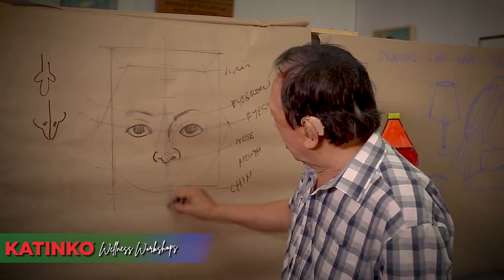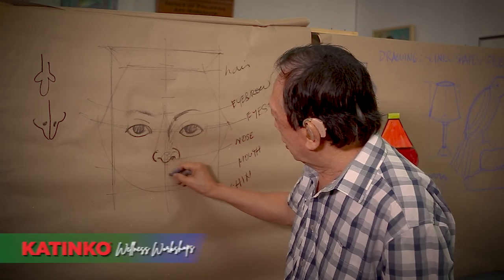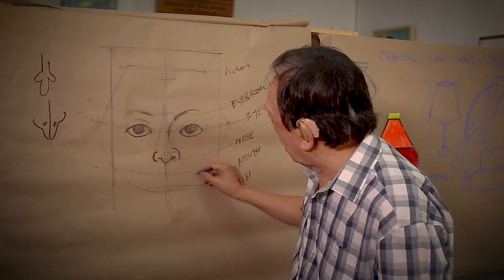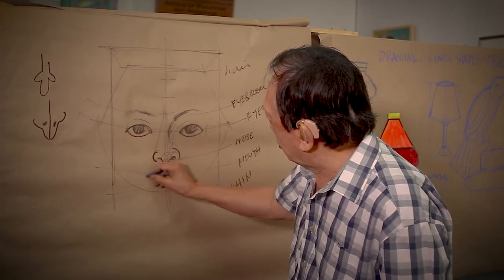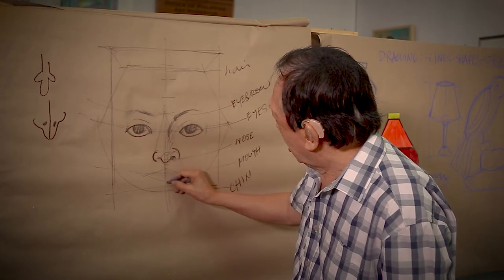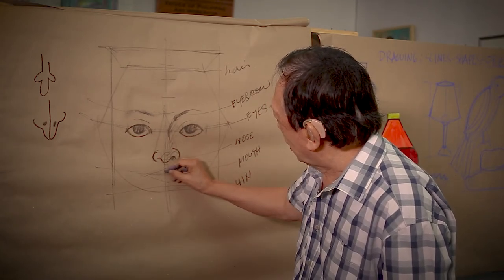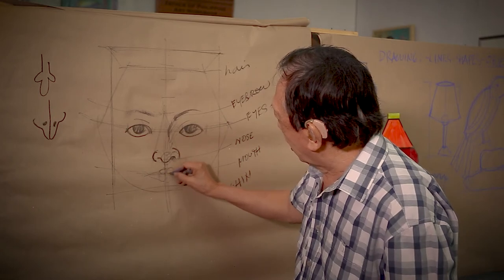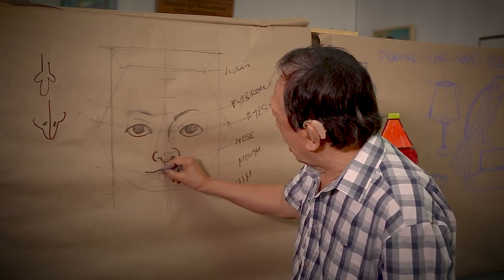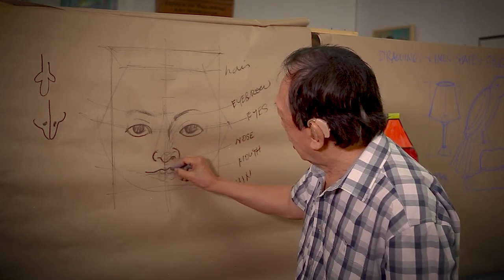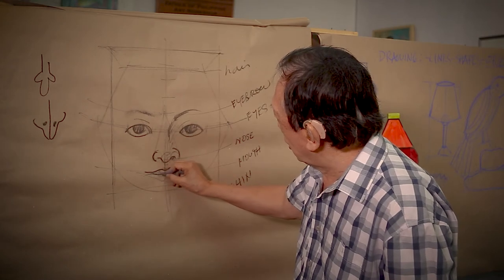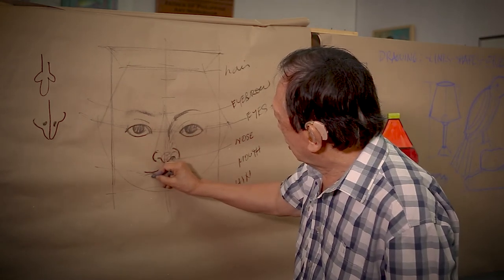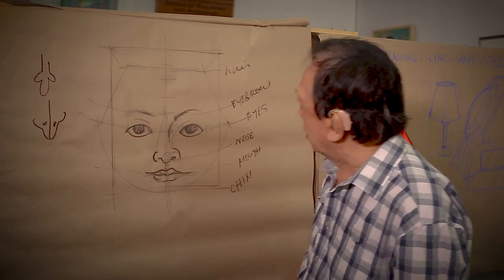Kapag naman yung bibig - yung bibig, ito. One vertical line, then one horizontal line, and then four triangles here. Apat na triangle yan. Mamiya, tuturo ko yan. And then four circles. Pagkatapos, ayan. Susundin mo lang yung guideline na yan. Meron ka ng bibig.